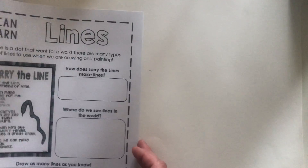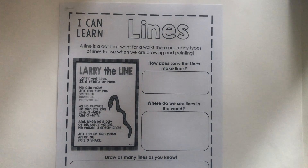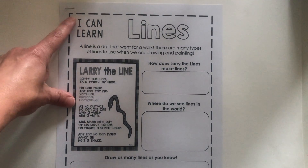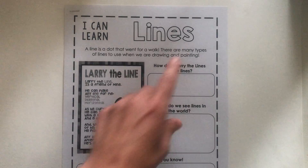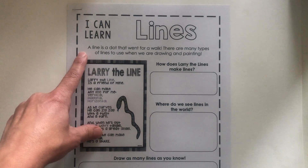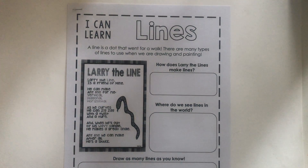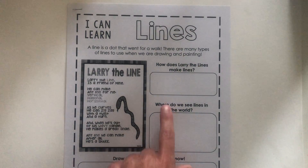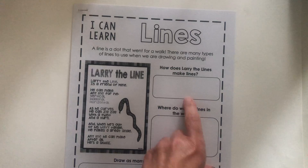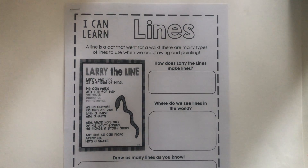I hope you enjoyed that poem. Now we are going to work on our worksheet together today. It says I can learn lines. A line is a dot that went for a walk. There are many types of lines to use when we are drawing and painting. Our first box here says how does Larry the Line make lines.